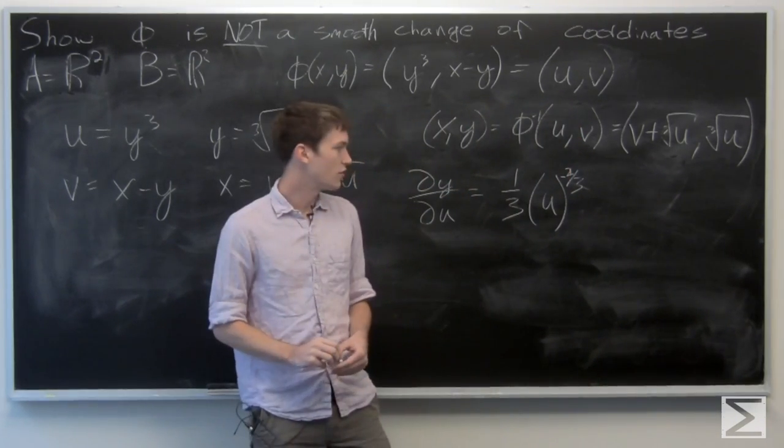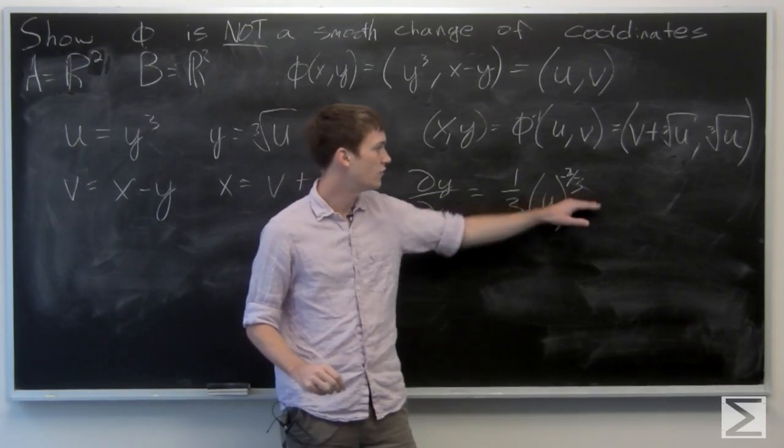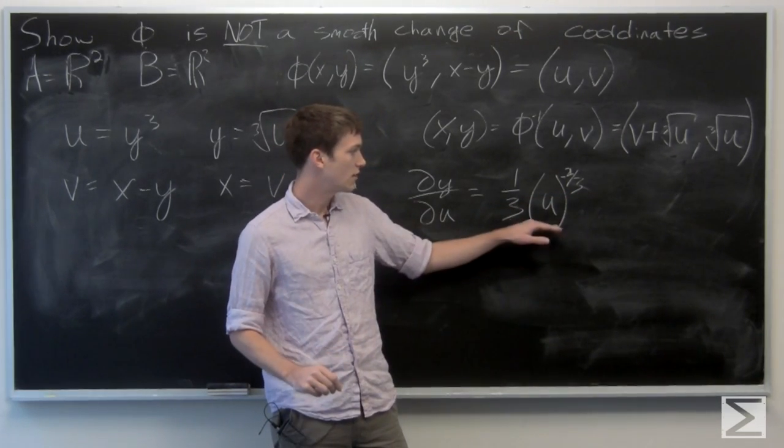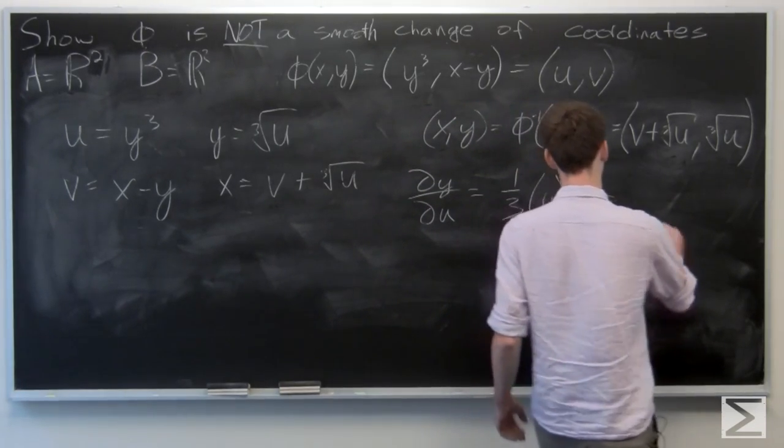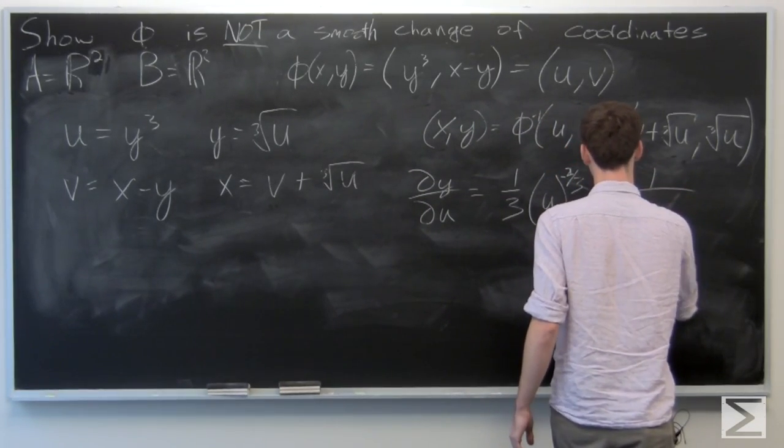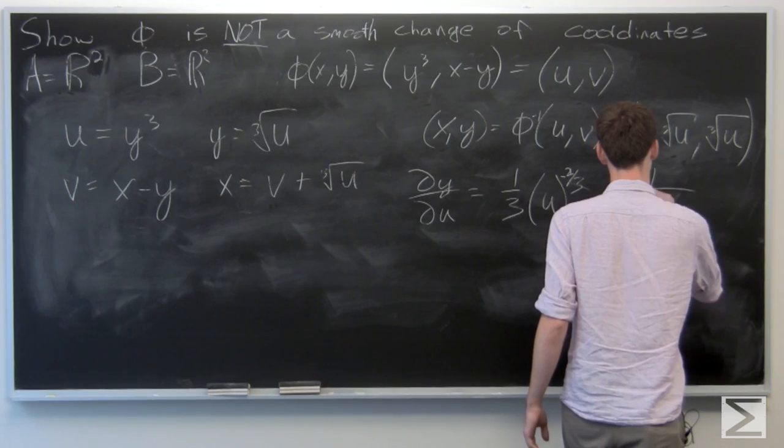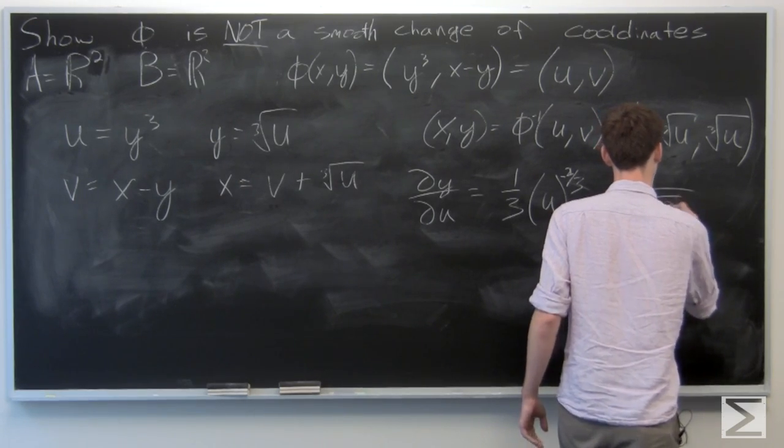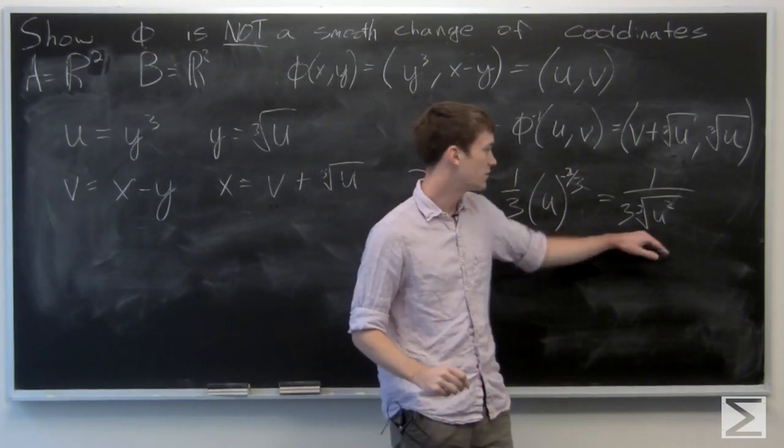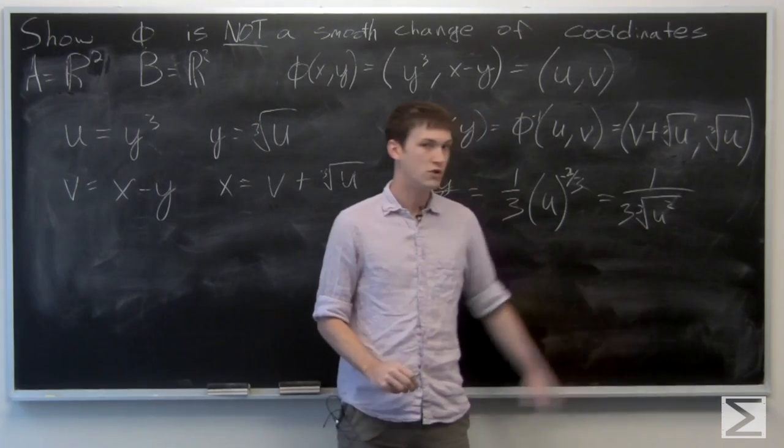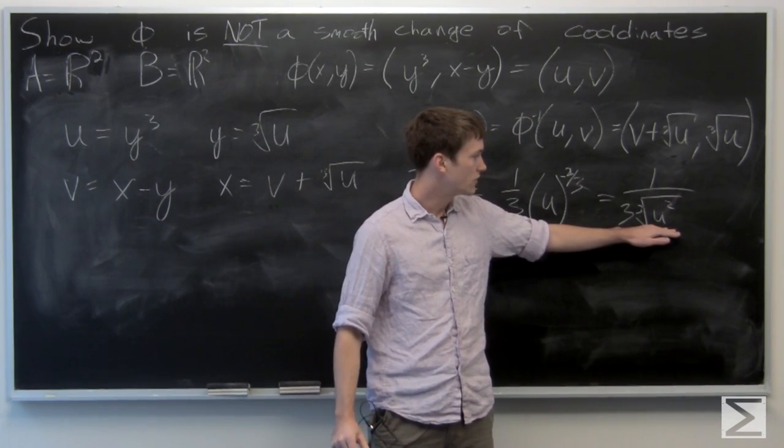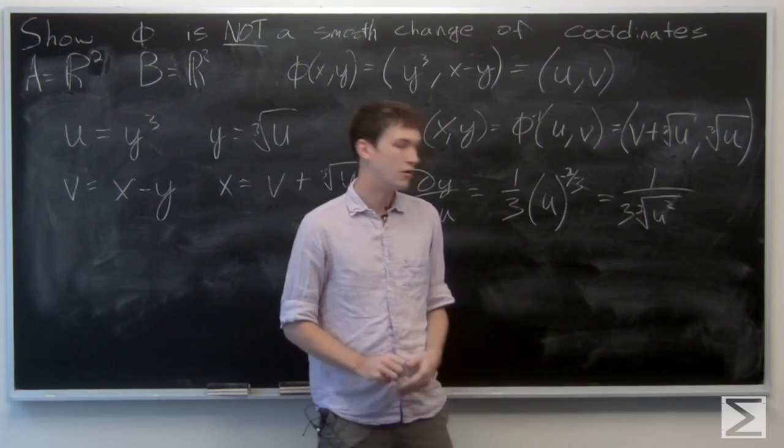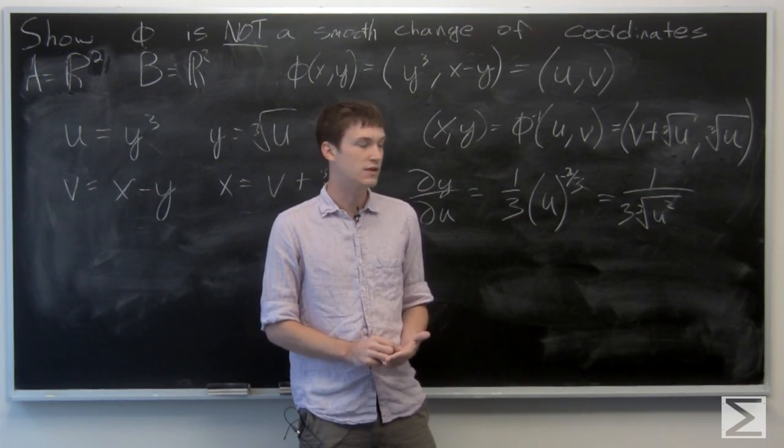This is 1/3 times u to the negative 2/3, which means we have 1 over 3 times the cube root of u squared. If we let u equal 0, we see that our denominator is 0 and the derivative doesn't exist.